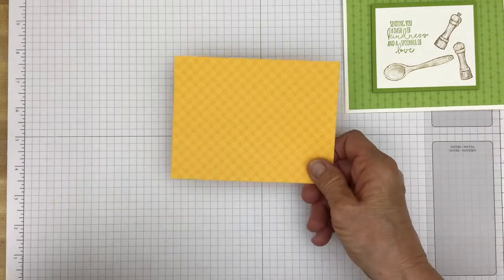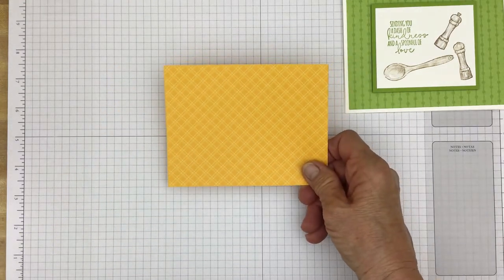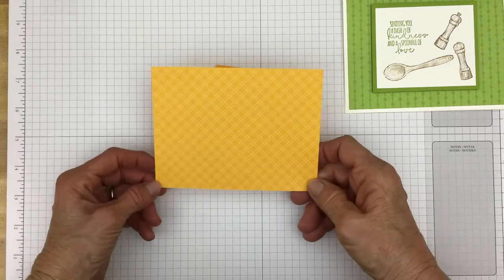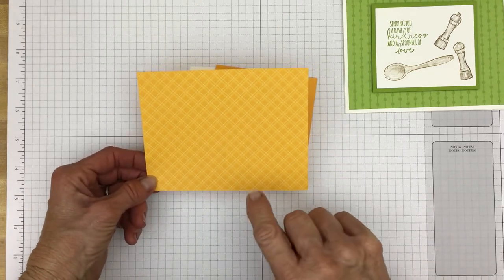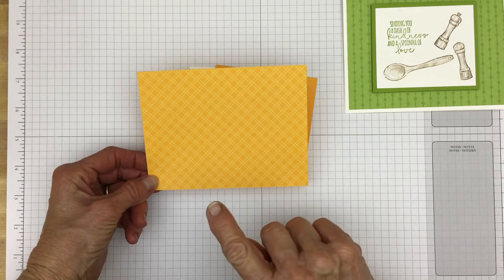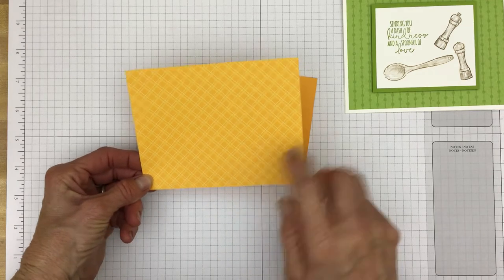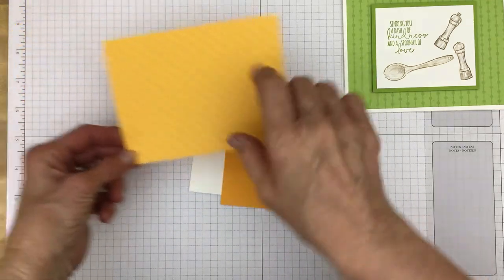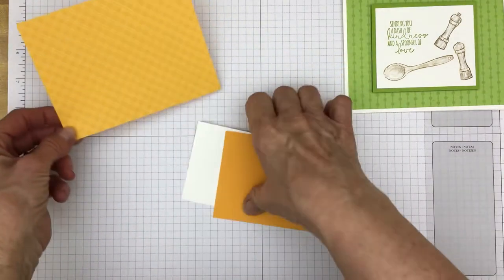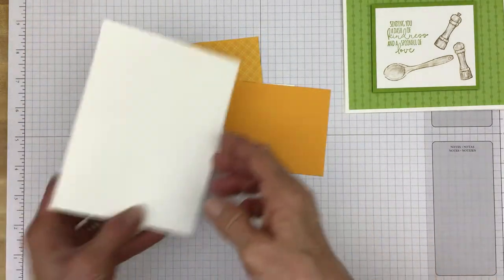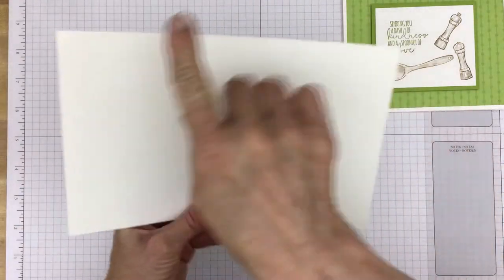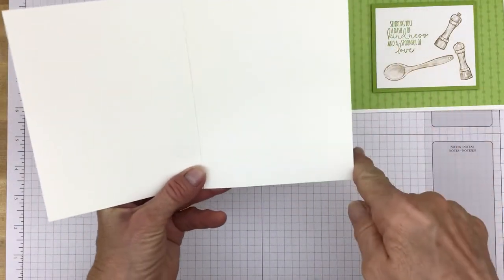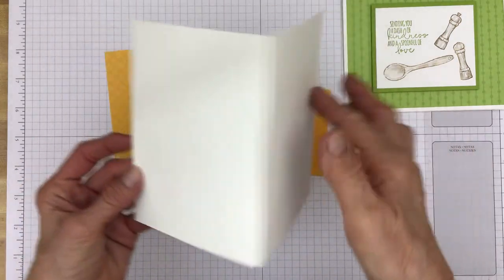And then you will need a piece of designer series paper. And this is the six by six designer series paper in the brights. And this is the mango melody of course. And it is four by five and a quarter. And then a basic white card base that is eight and a half by five and a half scored and folded at four and a quarter.